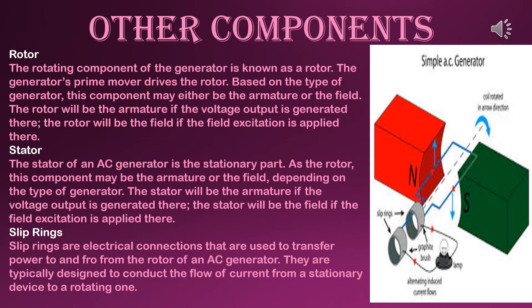The rotating component of the generator is known as the rotor. The generator's prime mover drives the rotor. Based on the type of generator, this component may either be the armature or the field. The rotor will be the armature if the voltage output is generated there, and the field if the field excitation is applied there. The stator of an AC generator is the stationary part. It may be the armature or the field depending on the type of generator.